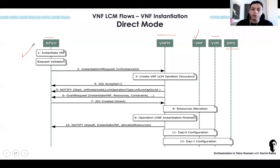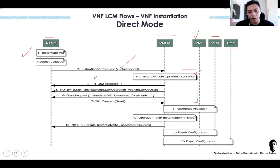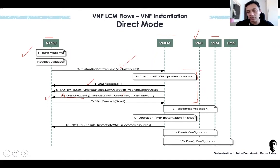The instantiation starts from the NFVO, triggered either by a northbound system or by an administrator. The request goes from the NFVO to the VNFM: 'Instantiate VNF request' — some sort of order management capability. The VNFM creates a VNF LCM Operation Occurrence and responds back to the API with 'accepted.' Then, in step six, the VNFM sends a grant request to the NFVO, as if asking: 'I want to instantiate this VNF; these are the resources required, these are the constraints and limitations.'